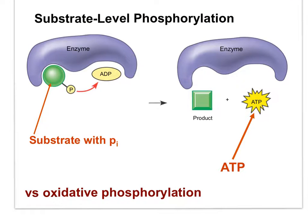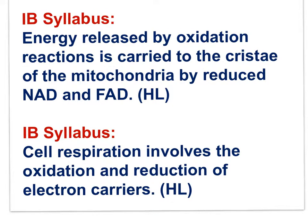In part 2, ATP formation in glycolysis and the Krebs cycle occurs when a phosphate group is transferred to ADP from a substrate molecule. In the electron transport system, ATP synthesis happens slightly differently — it occurs by a process known as oxidative phosphorylation. Energy released by oxidation reactions is carried to the cristae of the mitochondria by reduced NAD and FAD. Reduced NAD is NADH; reduced FAD is FADH2.